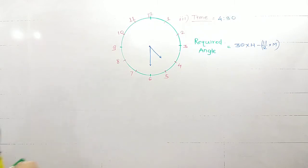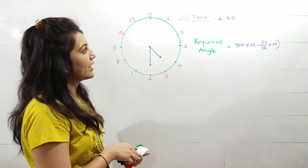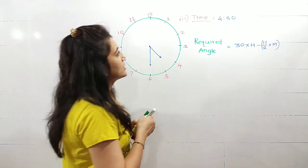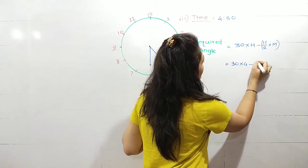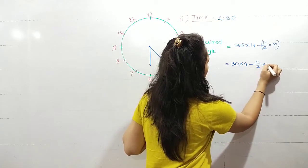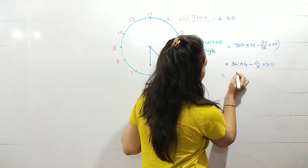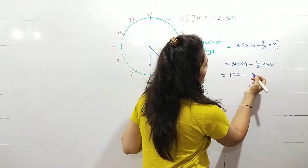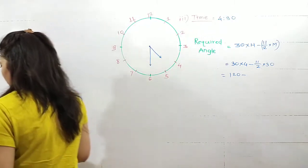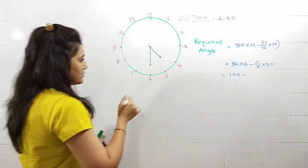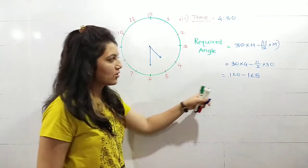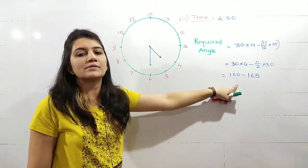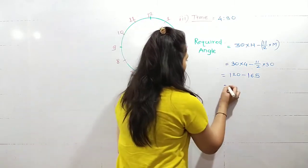The third time is 4:30. So for 4:30, h value is 4 and minute value is 30. I will write here 30 into 4 minus 11 by 2 into 30, which is equal to 120 minus 15 into 11, which is coming out as 165.